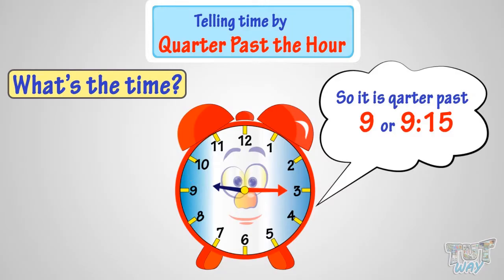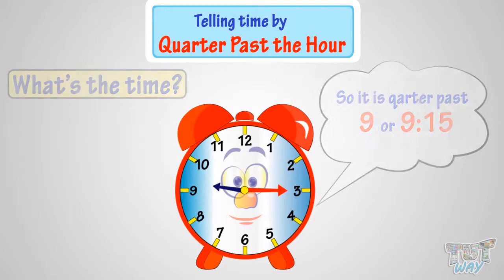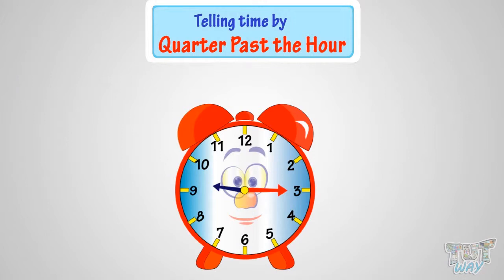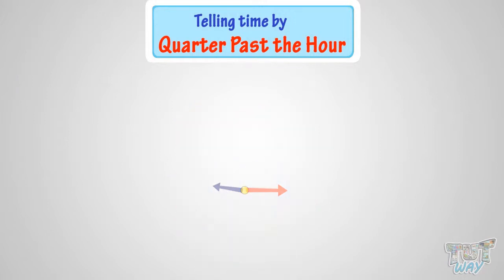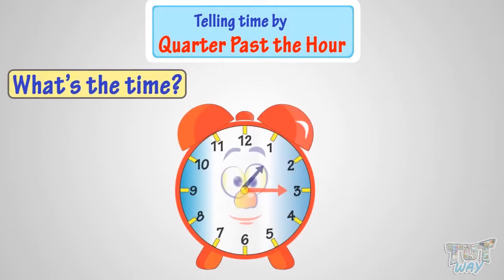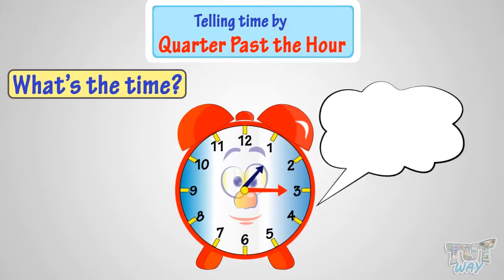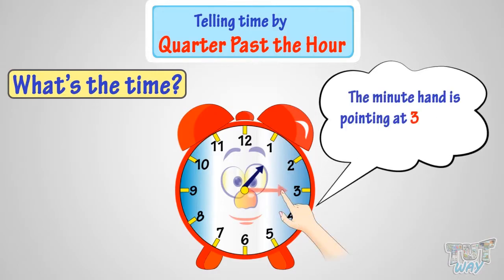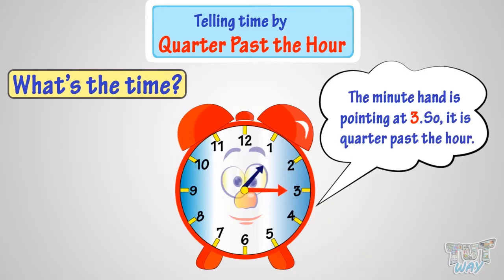Let's take another example. Try to figure out what's the time in this analog clock. The minute hand is pointing at three, so it's quarter past the hour.